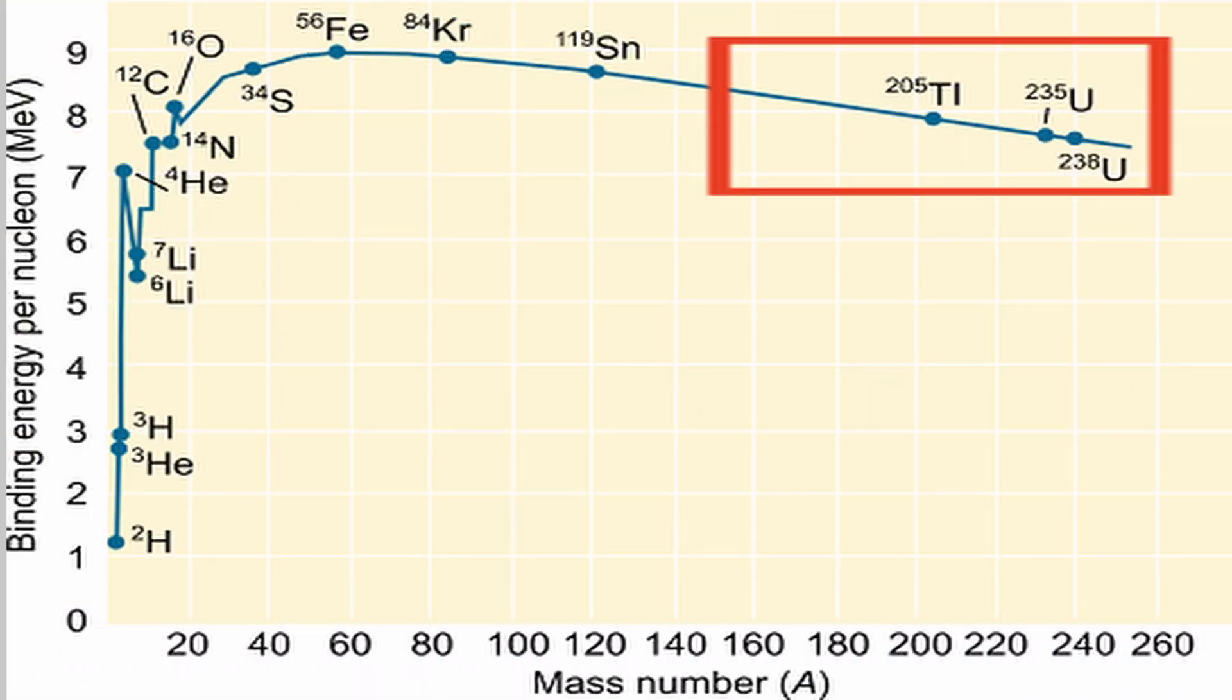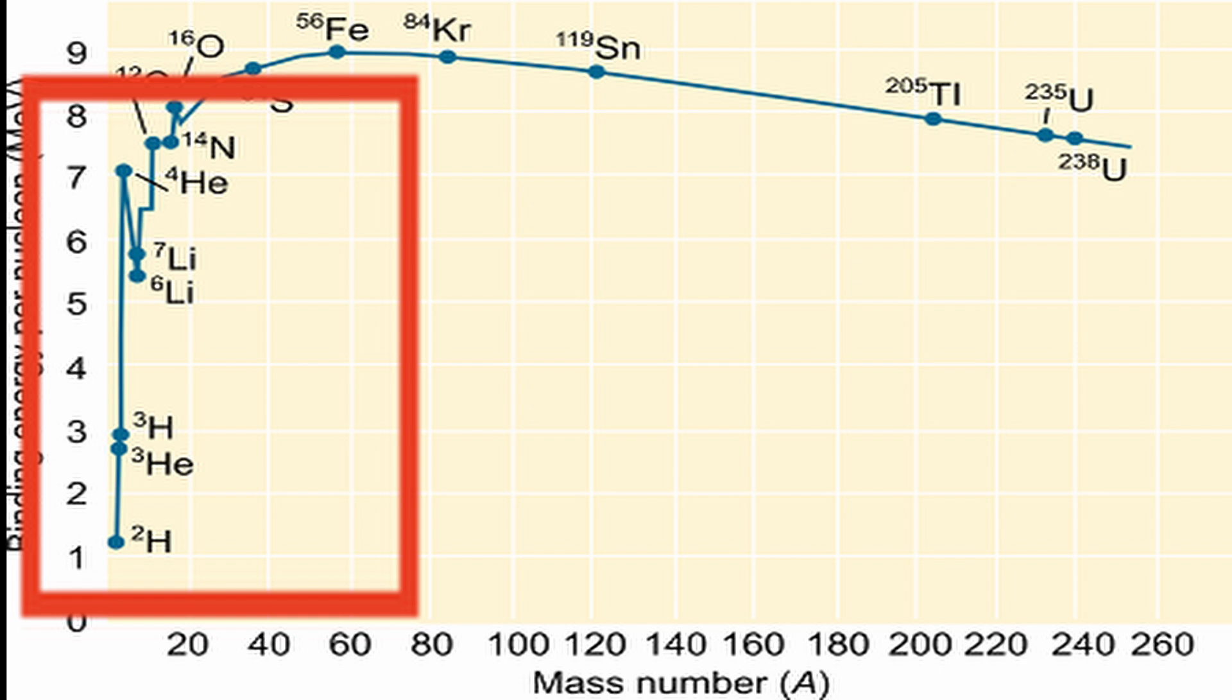If we look over to the right, we see large elements like uranium and plutonium have less binding energy, which means that if you split them into two smaller atoms, more similar to iron, then there's a bit of energy to release. That's nuclear fission. If we look to the left, we see small atoms like hydrogen and helium are far below iron, which means that if we can combine two deuterium atoms into one helium atom, there's an enormous amount of energy released.